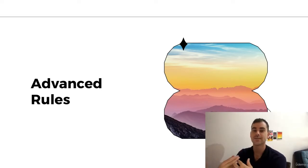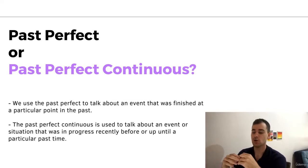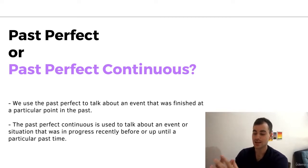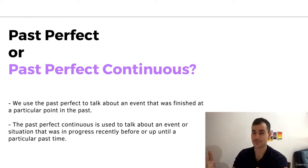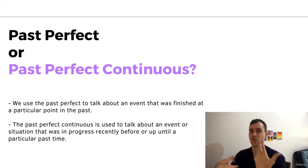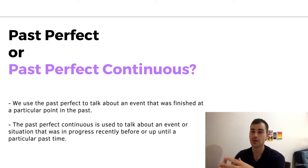Those are the basic usages of the past perfect continuous. We're going to go into some more advanced rules and special situations. It's quite common to be confused about past perfect or past perfect continuous. We use the past perfect to talk about an event that was finished at a particular point in the past. The past perfect continuous is used to talk about an event or situation that was in progress recently before or up until a particular past time. The difference is that the past perfect emphasizes that an event was finished at a particular point in the past. The past perfect continuous is more ambiguous — it could have finished or it could be continuing; we don't really know — it depends on context.